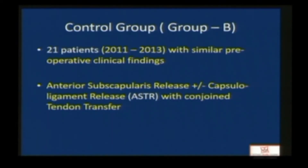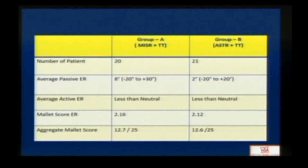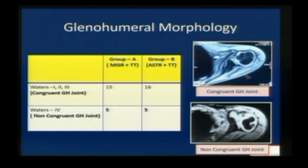The control group involved 21 patients who had similar clinical findings and underwent anterior subscapularis release with or without capsular ligamentous release with conjoint transfer performed in 2011 to 2013. All patients were comparable in terms of number, clinical preoperative examination, and the aggregate Mallet score. Fifteen patients had congruent glenohumeral joint matching Waters schema 1, 2, and 3, while five patients in each group had Waters 4 or non-congruent glenohumeral joint.